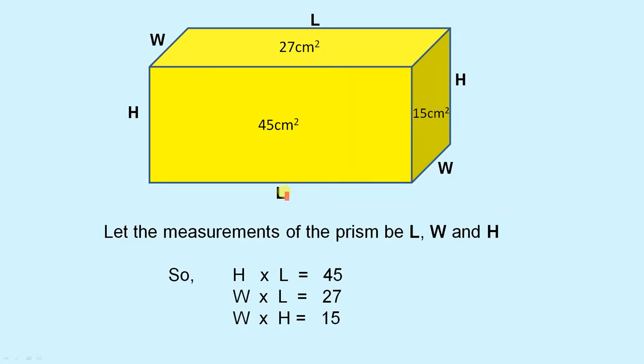Okay, so if we have L for the length, W for the width, and H for the height, and I've also repeated those here. So let the measurements of the prism be L, W and H.